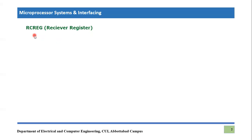The very first register we are going to learn in this lecture is the receiver register, or RCREG register. As the name suggests, it is totally opposite of the transmitter register — as when we want to transmit a value we put it in the transmitter register. So whatever value is being received by the microcontroller serially will come and be stored as 8-bit information in the receiver register. The final received value in 8-bit form will be present in the receiver register, and we can access this value from this register.